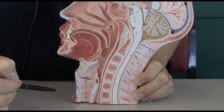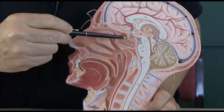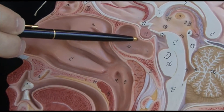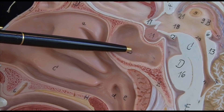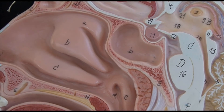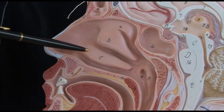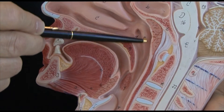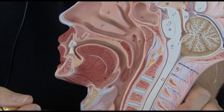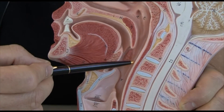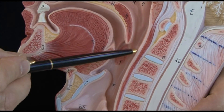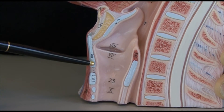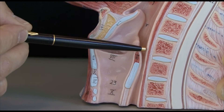Other interesting structures to notice: here we have a sinus, an air-filled space. Obviously the nose and the nasal cavities here. This is the nasopharynx. Behind the mouth we have the oropharynx. And lower down in the area of the larynx, we have the laryngopharynx.